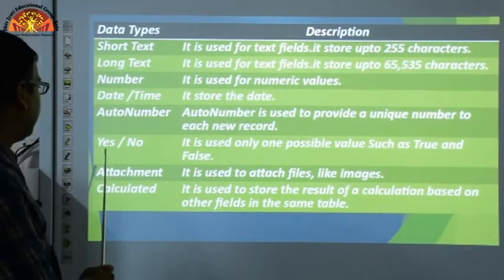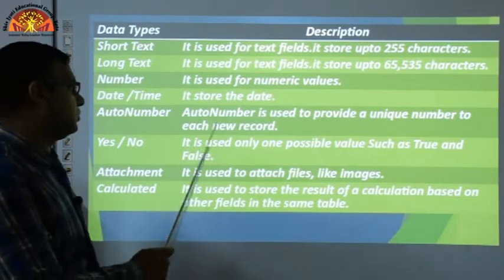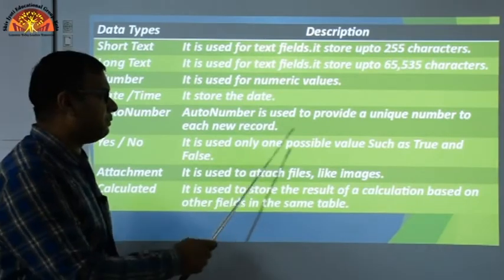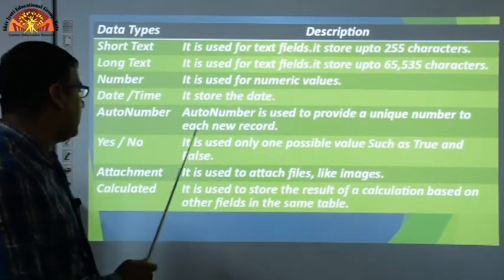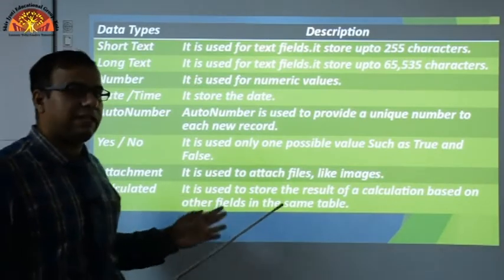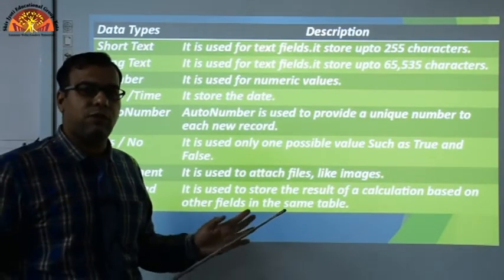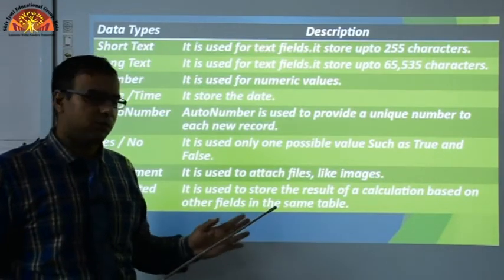Next is Yes/No. It is used for fields that have only one possible value such as true or false. This data type represents only true or false values.